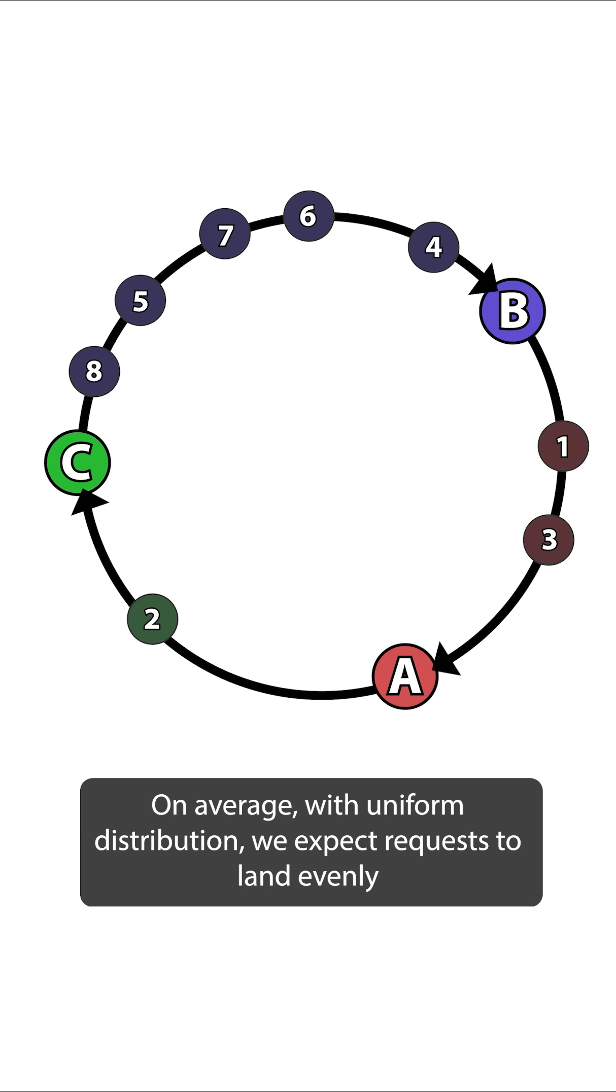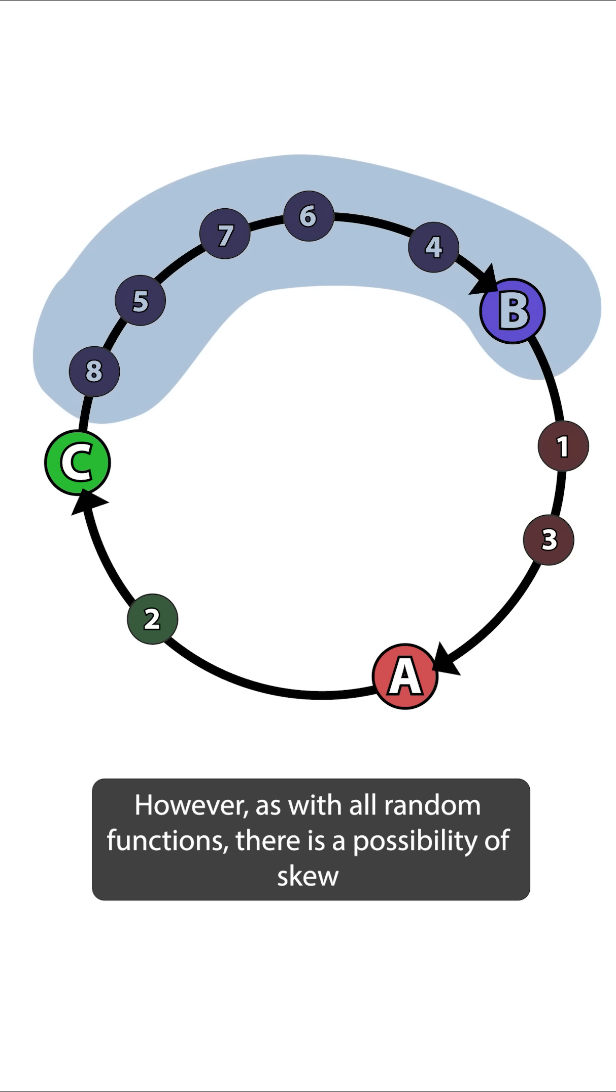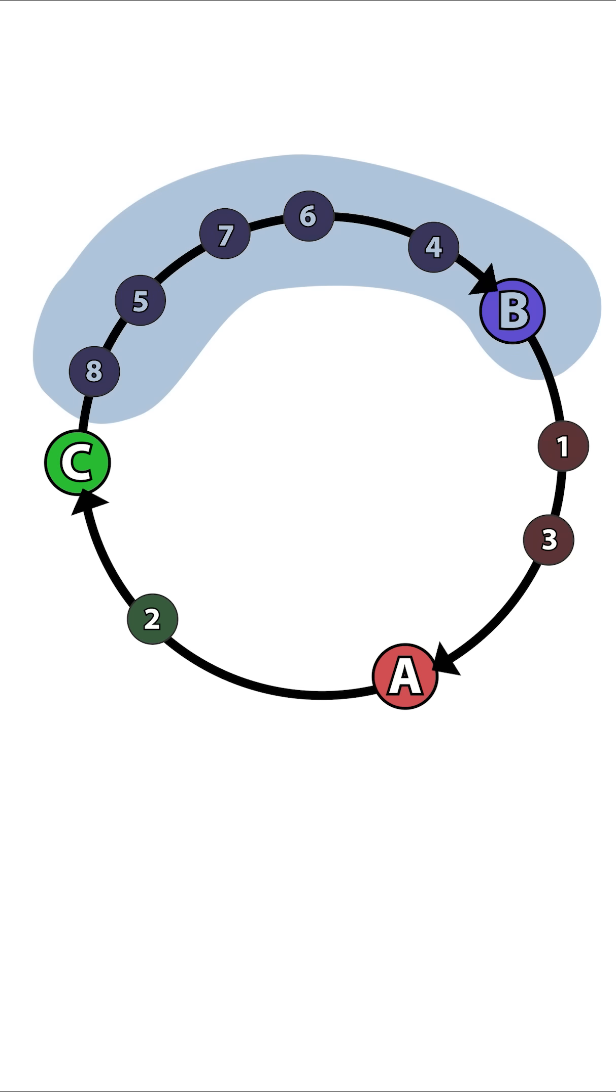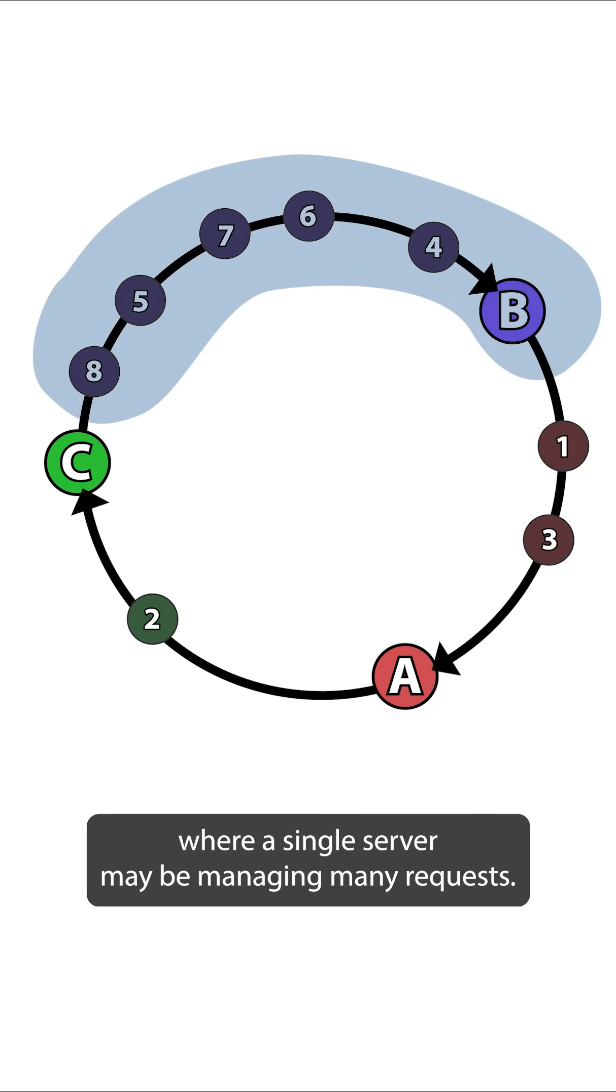On average with uniform distribution, we expect requests to land evenly on all servers. However, as with all random functions, there is a possibility of skew, where a single server may be managing many requests.